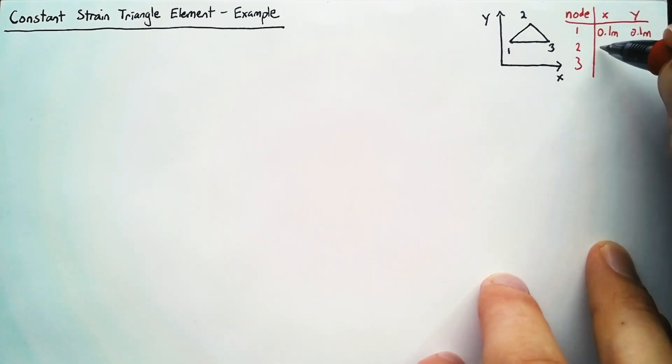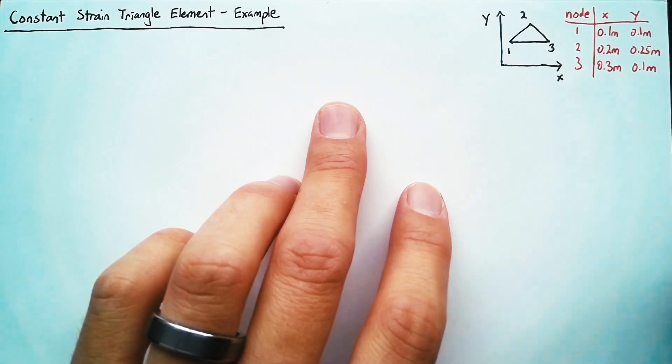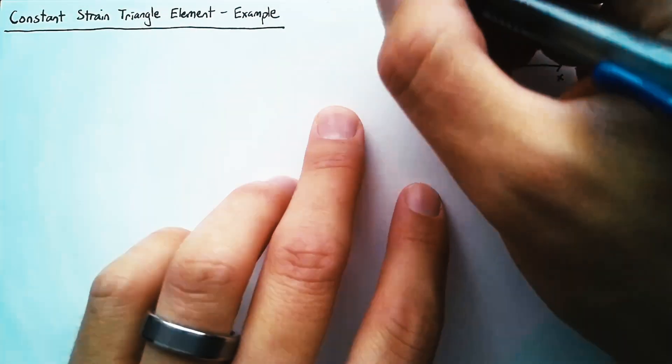Node 2, 0.2 and 0.25. Node 3 is going to be 0.3 and 0.1 again.